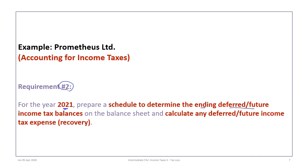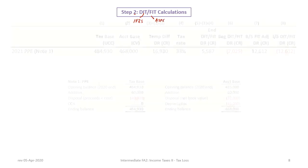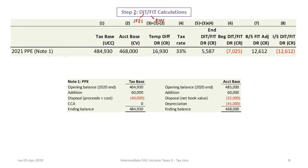Our second requirement is to prepare a schedule to determine the ending deferred or future tax balances and calculate any deferred or future income tax expense or recovery. Deferred tax is the IFRS term; future tax relates to ASPE. For property, plant, and equipment, our tax base — the undepreciated capital cost — starts with an opening balance of four hundred sixty-four thousand nine hundred and thirty carried forward from the previous year.